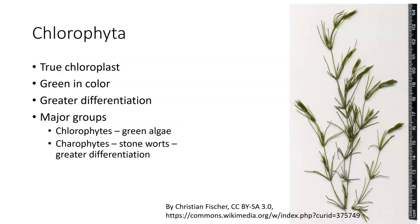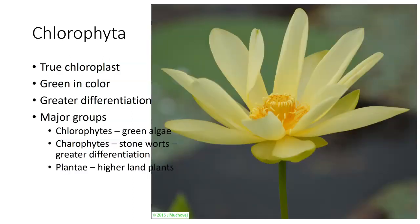The charophytes are the stoneworts, and you can see that particular format that looks much like a regular plant. This particular individual is about 14 centimeters long — about 6 inches — which means it's starting to be a fairly well-differentiated organism. You can see it's branching, and it has what look like rudimentary leaves on it. So we have stoneworts that are very interesting, and then we get into the higher plants from there.